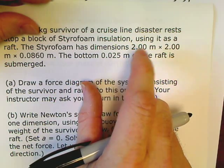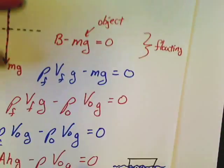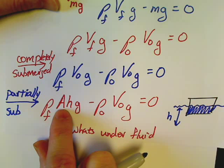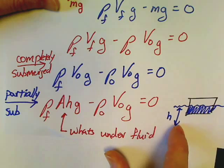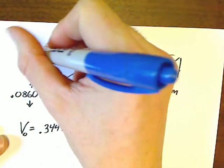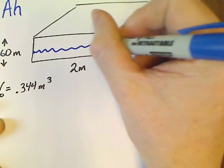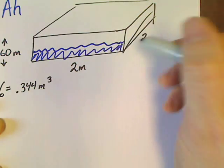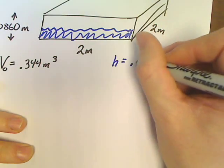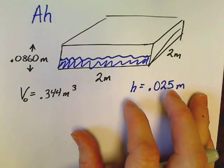It tells me one more thing. The bottom 0.025 meters is submerged. If you see a problem where something is partially submerged, that means we're going to end up using AH substituted into the equation, where H is how much is under the water. So here's my water line. My question is, how much of it is underwater? It says 0.025 meters of this object is actually underwater.